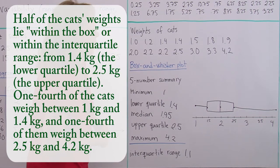Half of the cat's weights lie within the box, or within the interquartile range, from 1.4 kilograms, the lower quartile, to 2.5 kilograms, which is the upper quartile. And one fourth of the cats weigh between 1 kilogram and 1.4 kilograms, and that's the first whisker. And one fourth of them weigh between 2.5 kilograms and 4.2 kilograms, and that's the latter whisker.